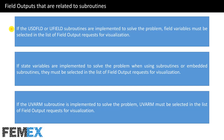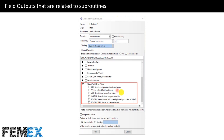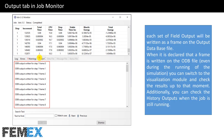Here I want to talk about field outputs related to subroutines. If the USDFLD or UFIELD subroutines are implemented, field variables must be selected in the list of field output requests for visualization. If state variables are implemented using subroutines or embedded subroutines, they must also be selected for visualization. If the UVARM subroutine is implemented, UVARM must be selected in the field output requests. Solution-dependent state variables, field variables, and user-defined output variables can be selected from the STATE, FIELD, and USER sections in the edit field output requests.